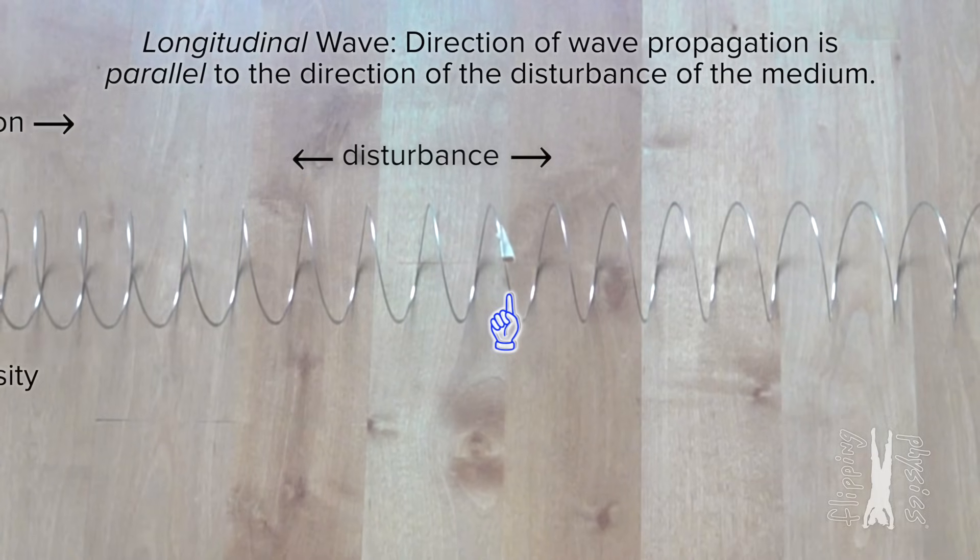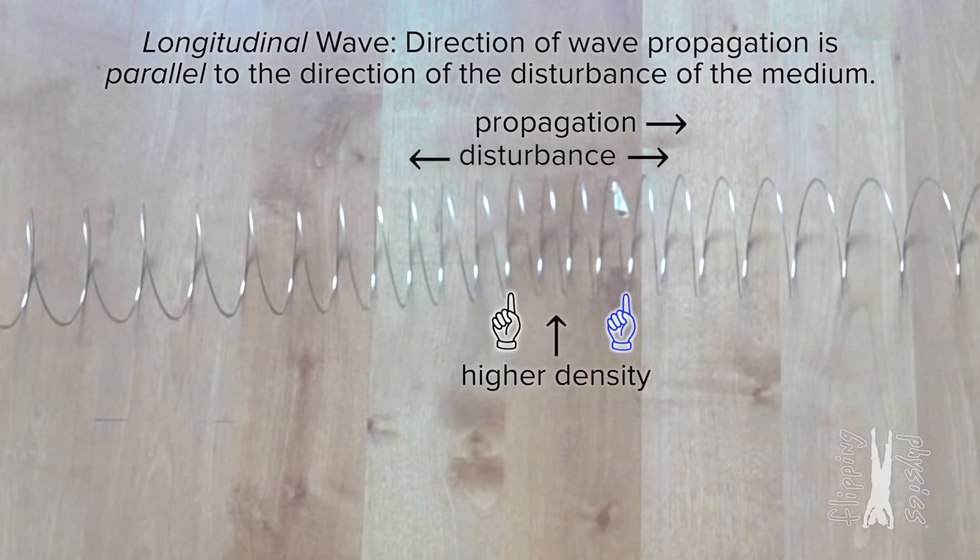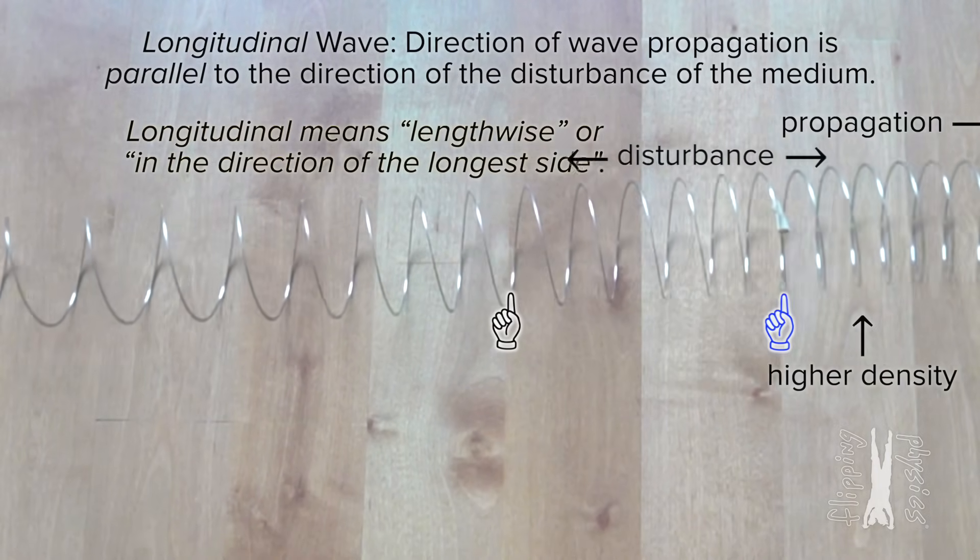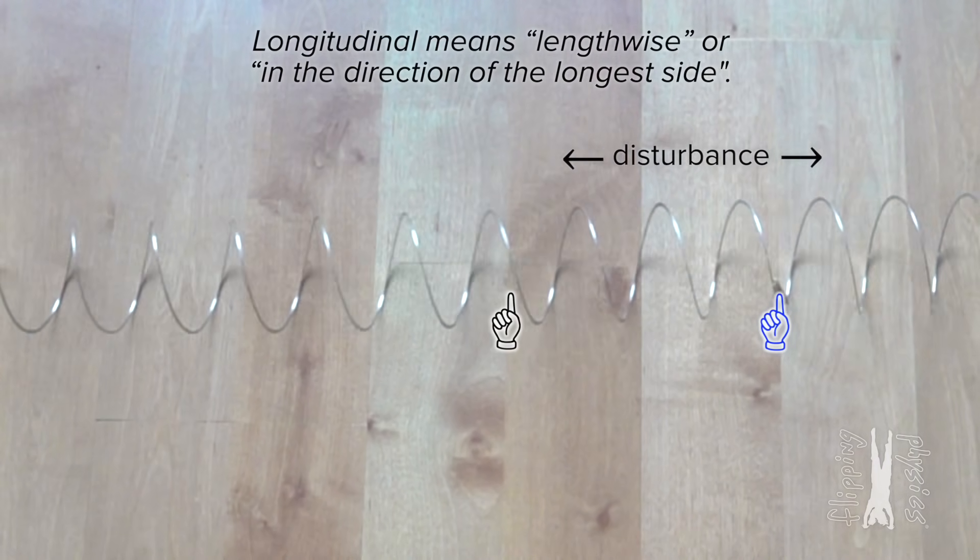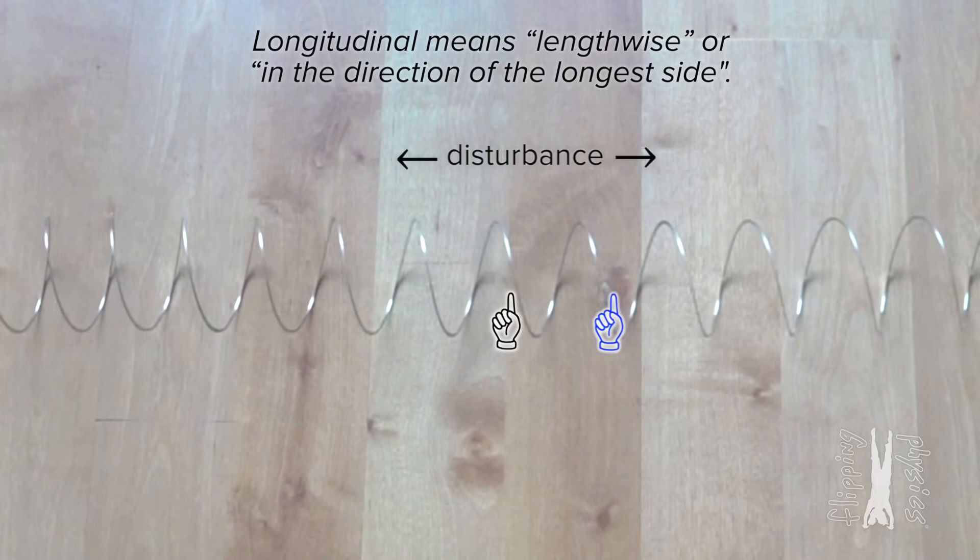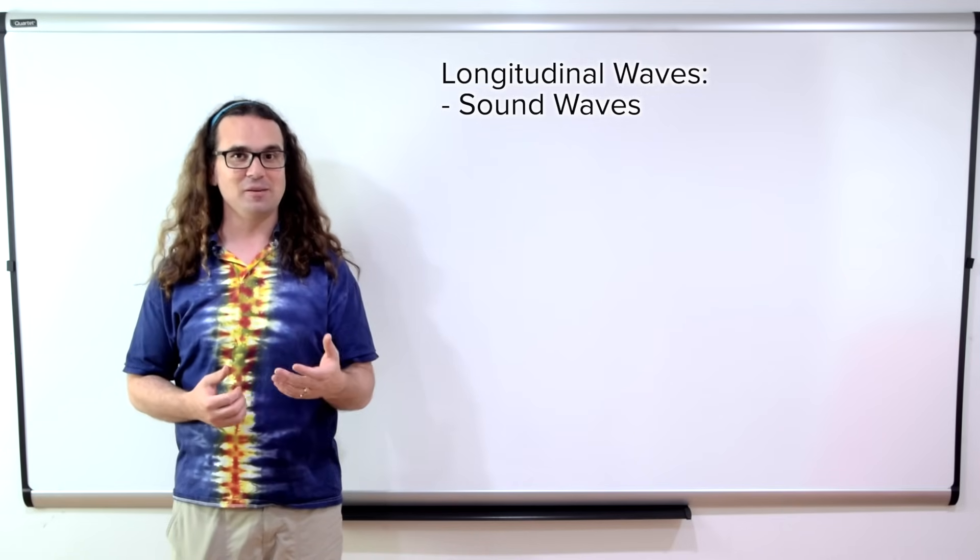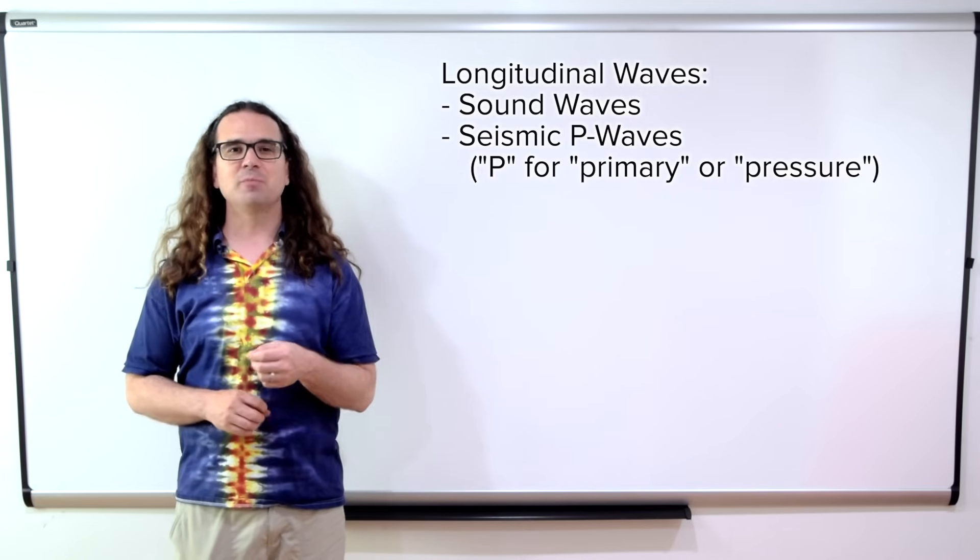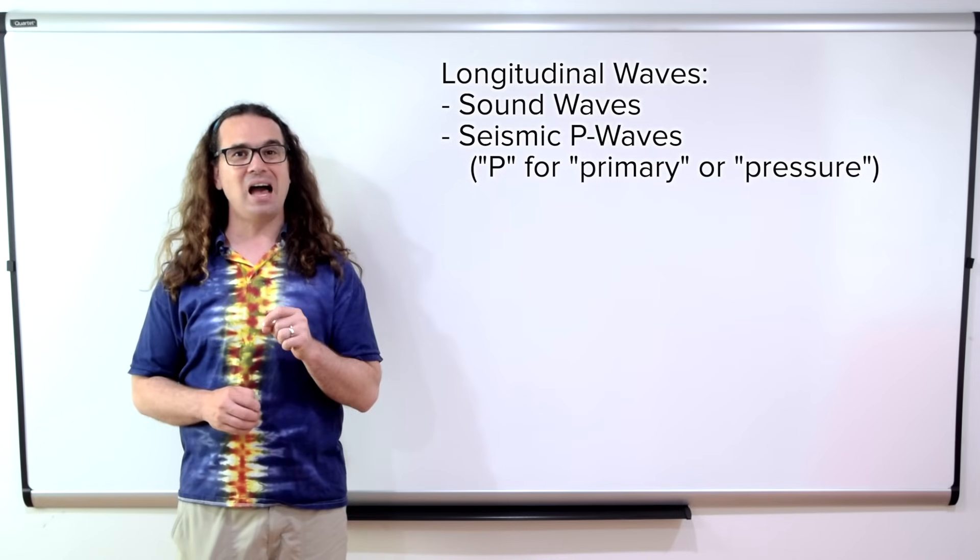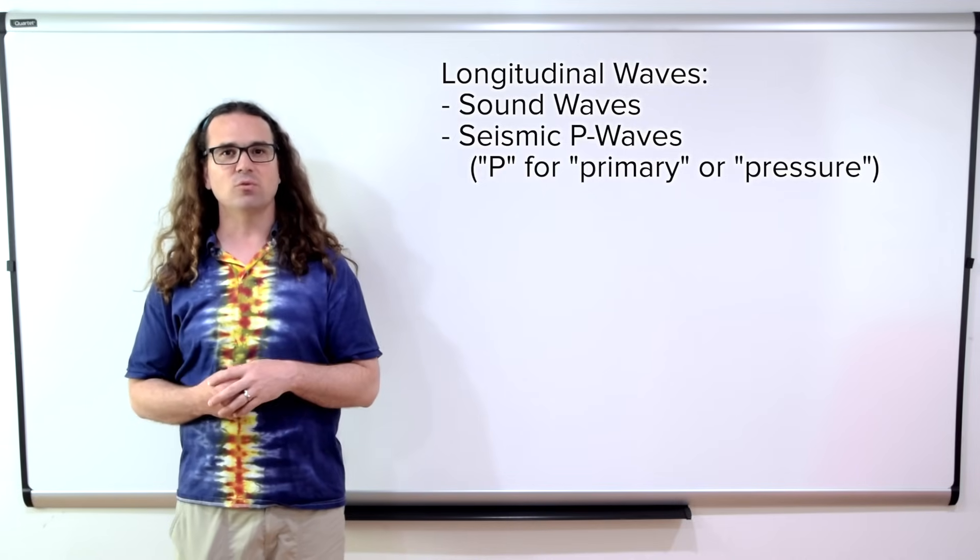Again, this is called a longitudinal wave. Right, because according to the Cambridge Dictionary, longitudinal means lengthwise, or in the direction of the longest side, which means parallel. Yeah, close. Correct, Billy. Examples of longitudinal waves are the sound waves you used to hear me, and seismic P waves. P is for primary or pressure wave. Seismic P waves are waves of high and low compression moving through the earth, much like sound waves do.